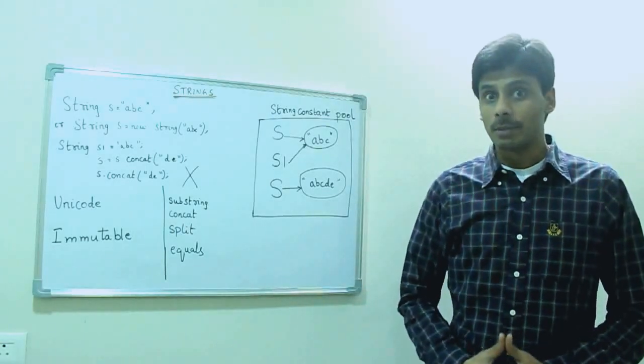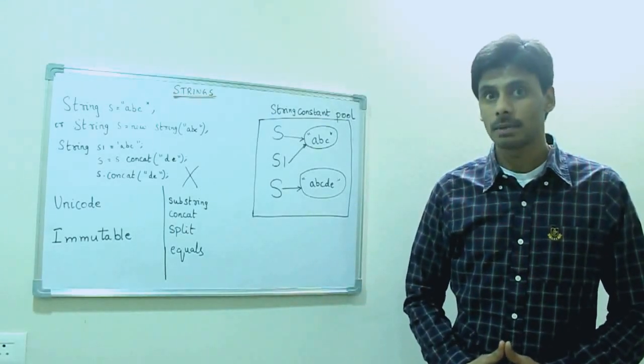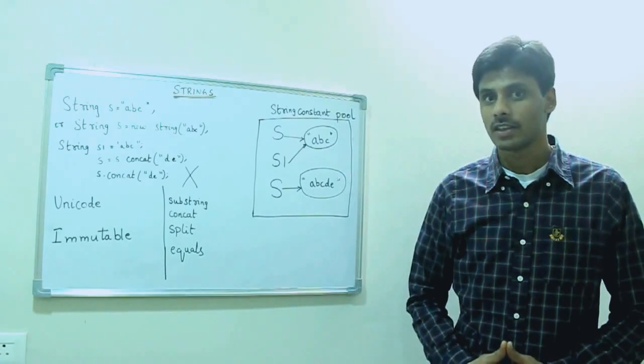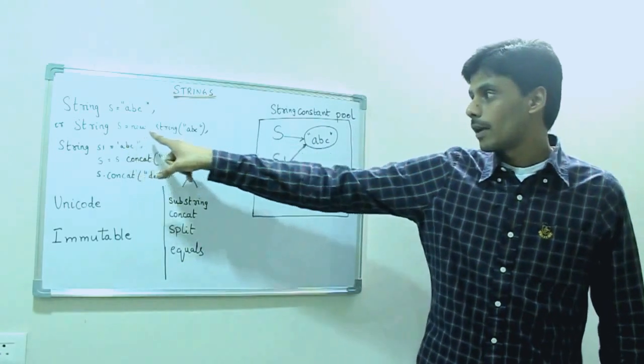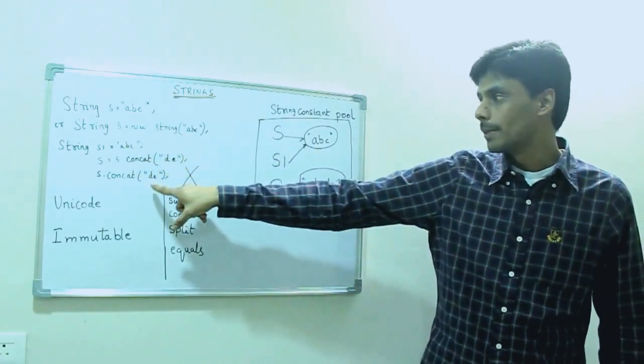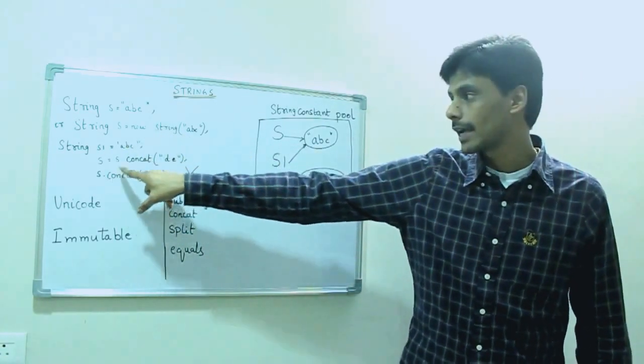Strings in Java are immutable, meaning they are not susceptible to change. For example, if we change the value of S from ABC to ABCDE by using the concat method...